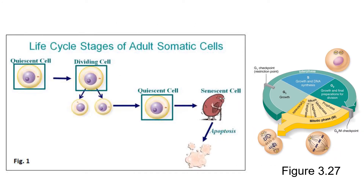Now that we have an understanding of what somatic cells are, let's talk about the life cycle stages of somatic cells. I'm going to use this figure from your lab manual here on the left and this figure from your book showing the life cycle of a cell on the right. When a cell is in interphase, it is a quiescent cell — it's not dividing, it's growing, it might be preparing for division. At some point, that cell gets a chemical signal that it's time to divide, enters the mitotic phase, and becomes a dividing cell. It divides, and then the two new daughter cells are in the quiescent phase at G1.